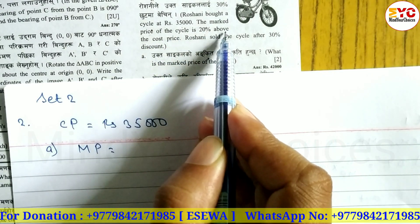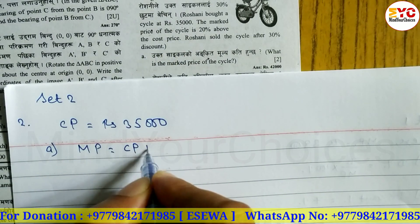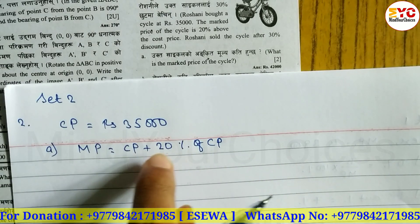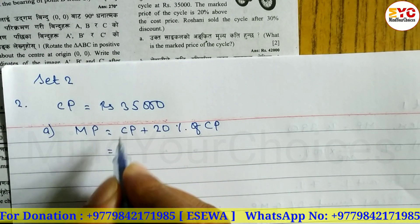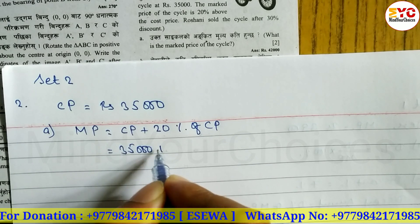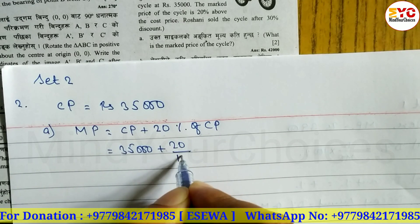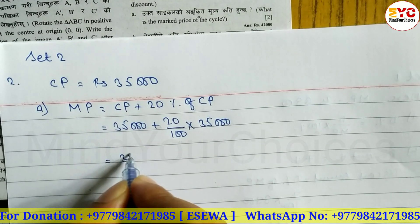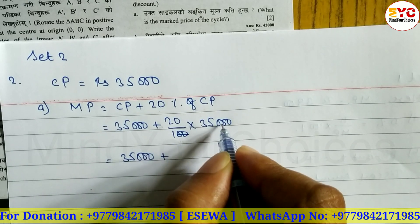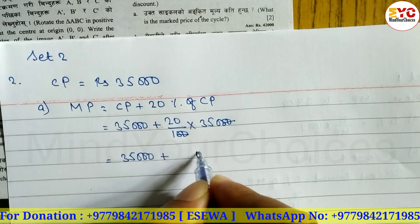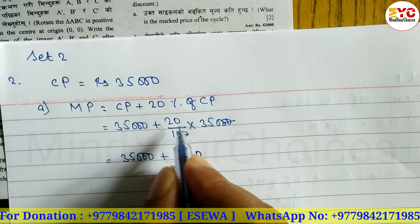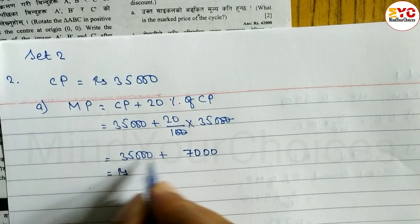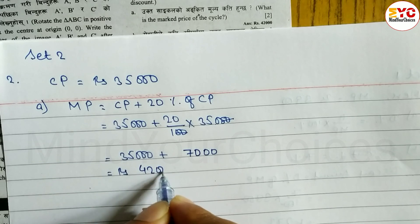The mark price of the cycle is 20% above the cost price. So MP = CP + 20% of CP. CP is equal to 35,000. So MP = 35,000 + (20/100) × 35,000. Calculating: 20 cancels to give 7,000. So 35,000 + 7,000 = 42,000. Mark price is equal to 42,000.